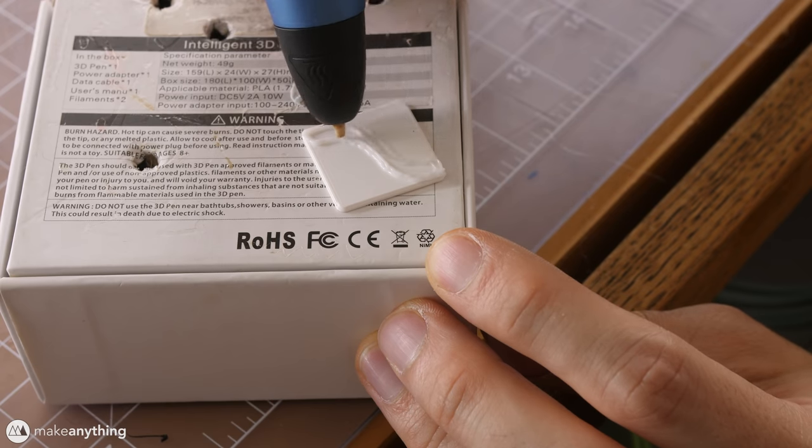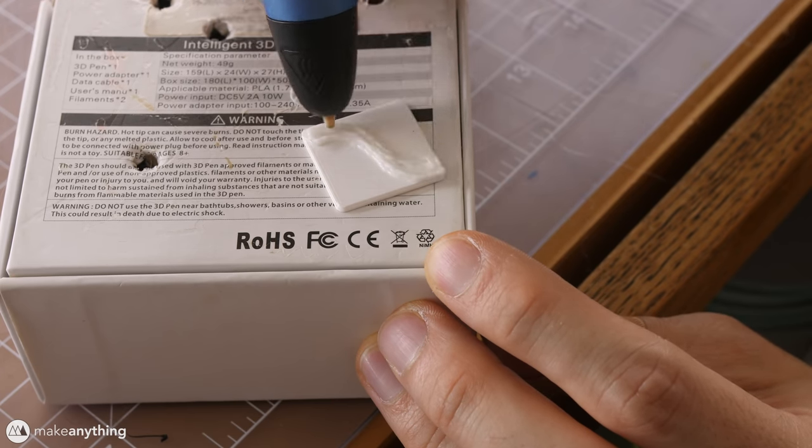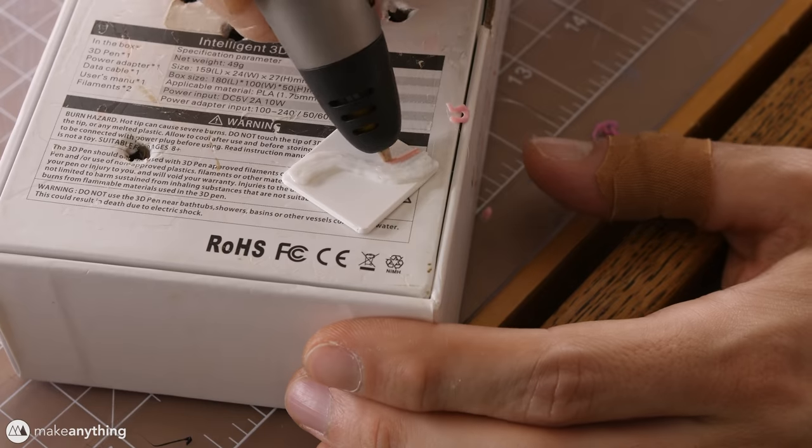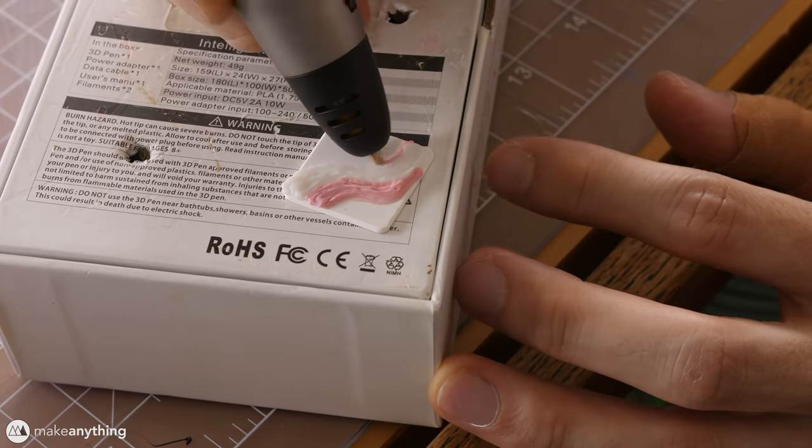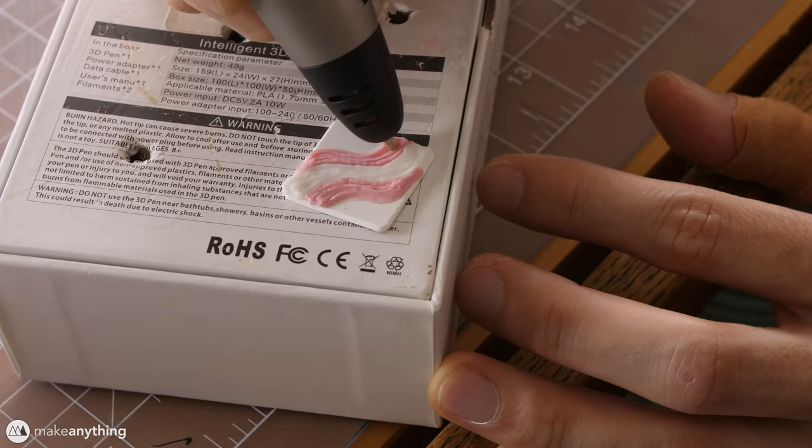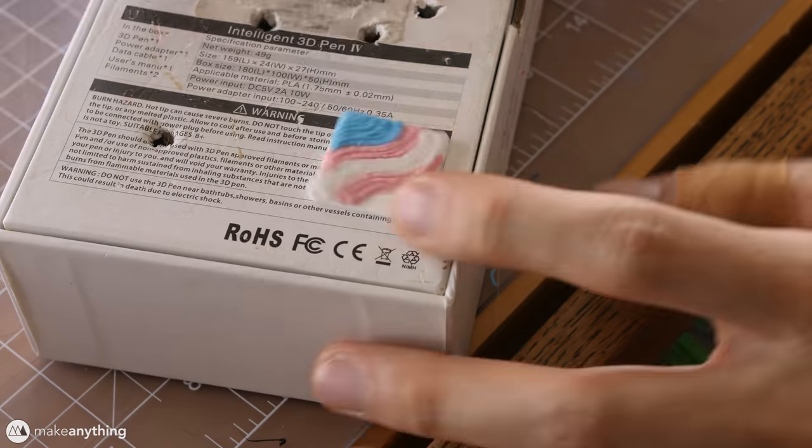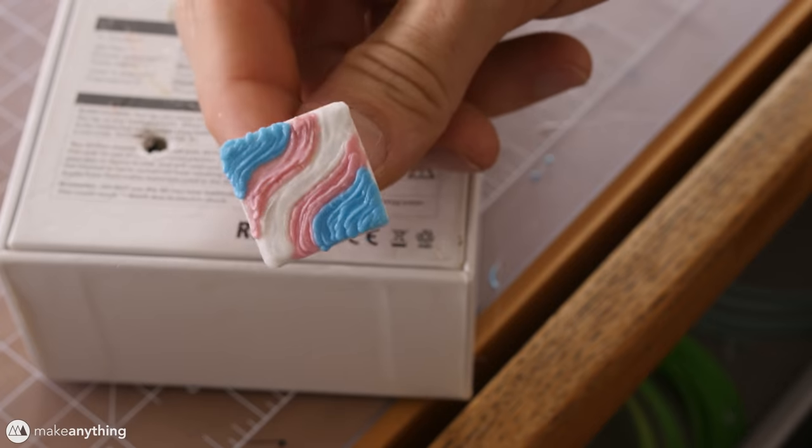Our next pixel request comes from Suxty, who asked me to draw a trans flag. Now, I've already drawn one of these for a previous pixel. So this time around, I thought I'd switch it up and make the flag kind of wavy and diagonal. Just to give it some extra style. And I think that ended up looking really cool.